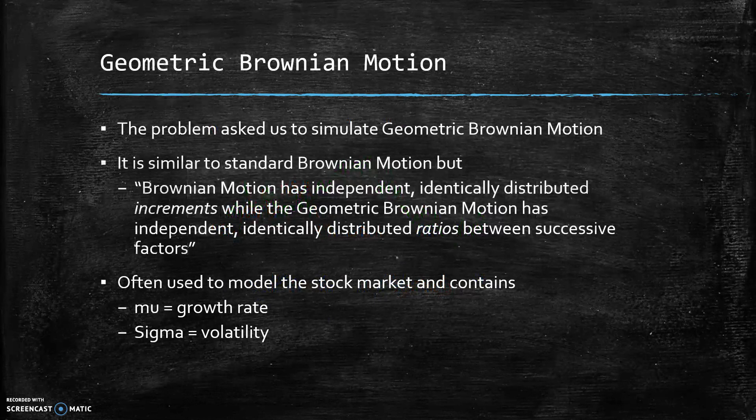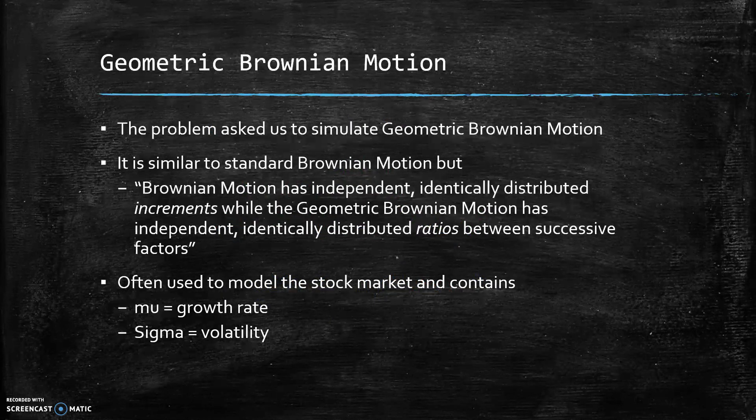Moving into the geometric Brownian motion. So this problem is pretty similar to the last one I just explained. However, Brownian motion has independent identically distributed increments, while the geometric Brownian motion has independent identically distributed ratios between successive factors.